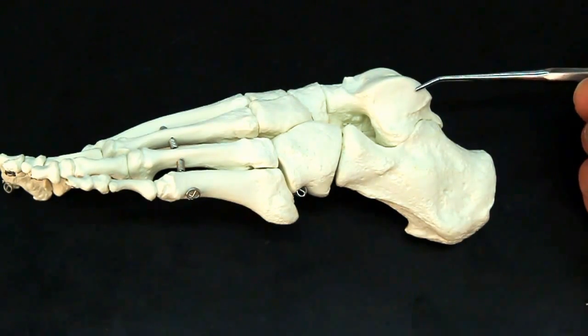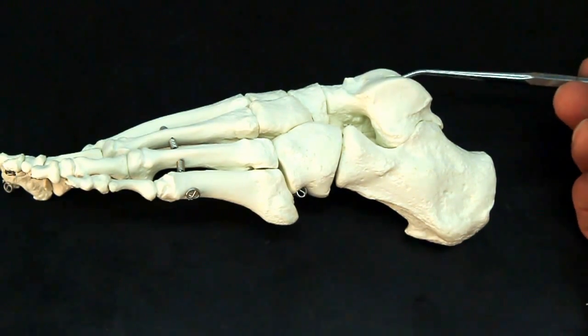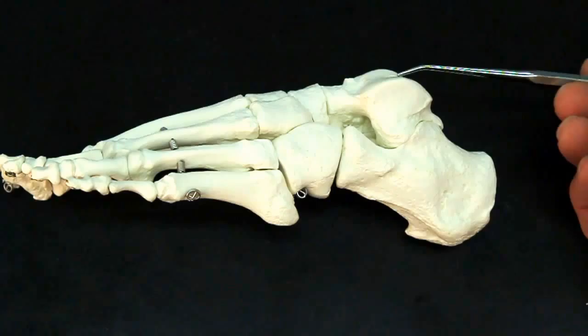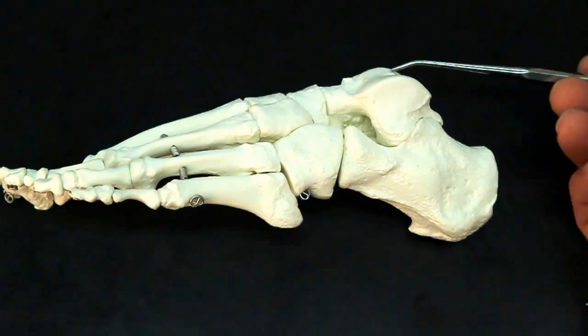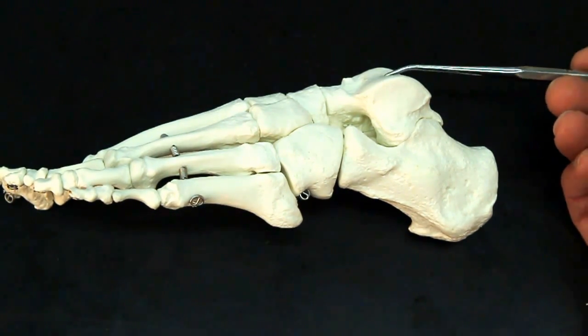While the bone just above it, the one that will articulate with the tibia, this is going to be the talus.